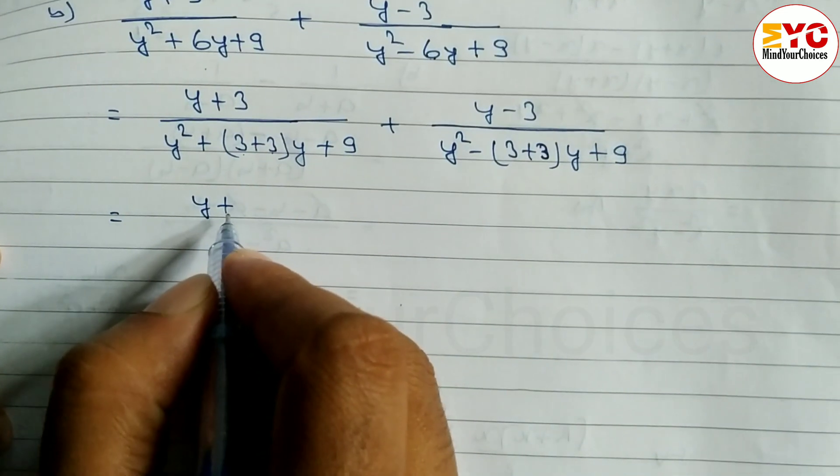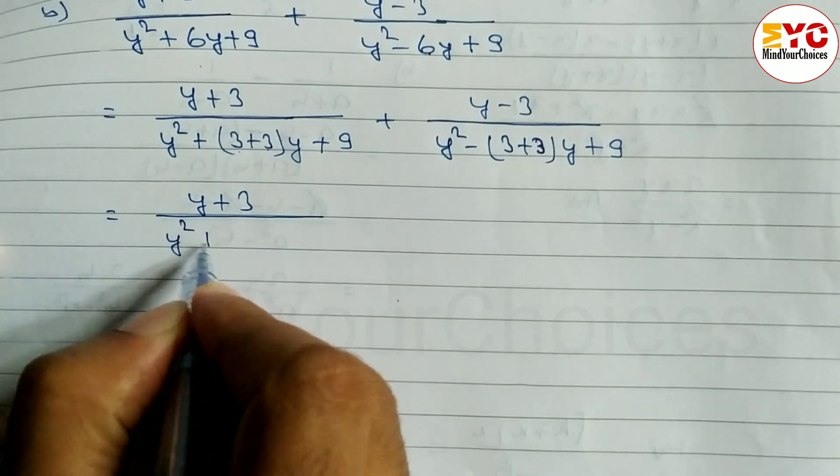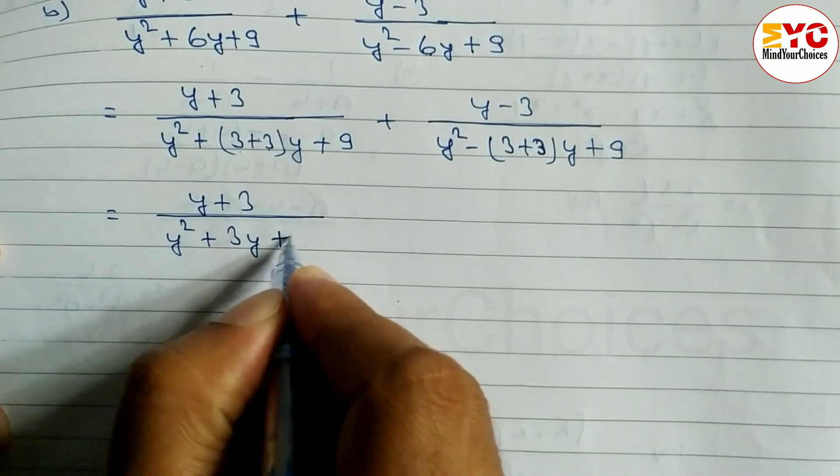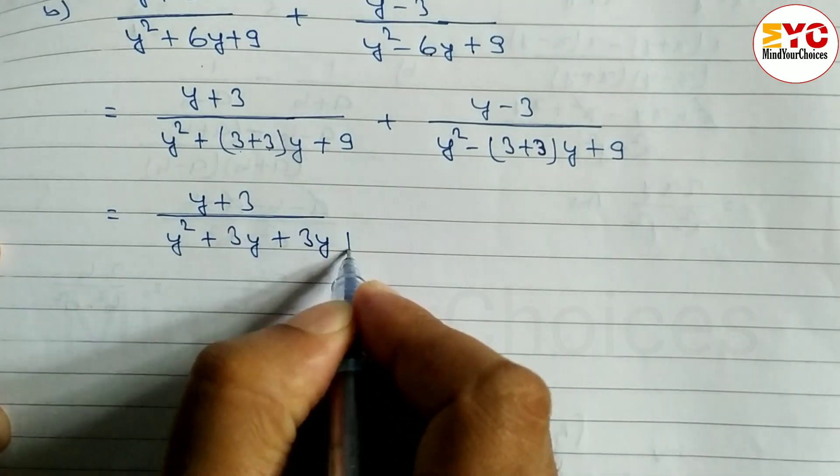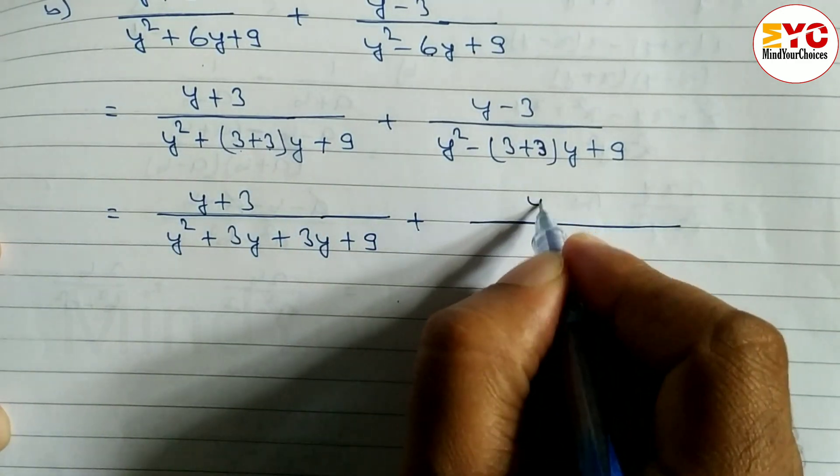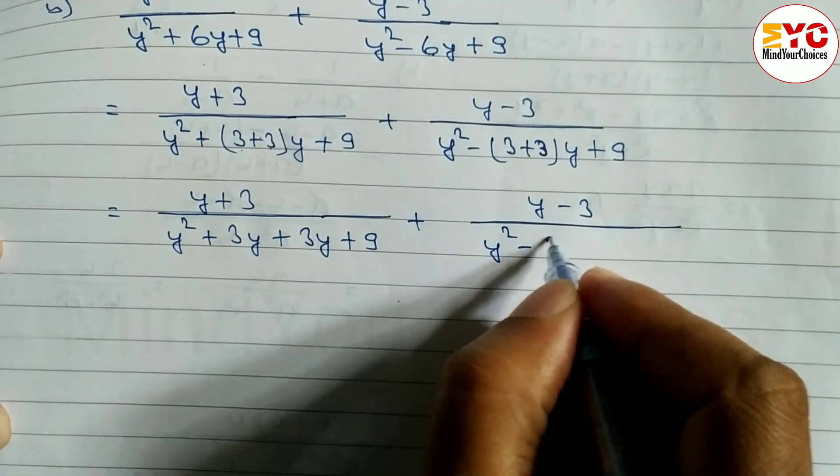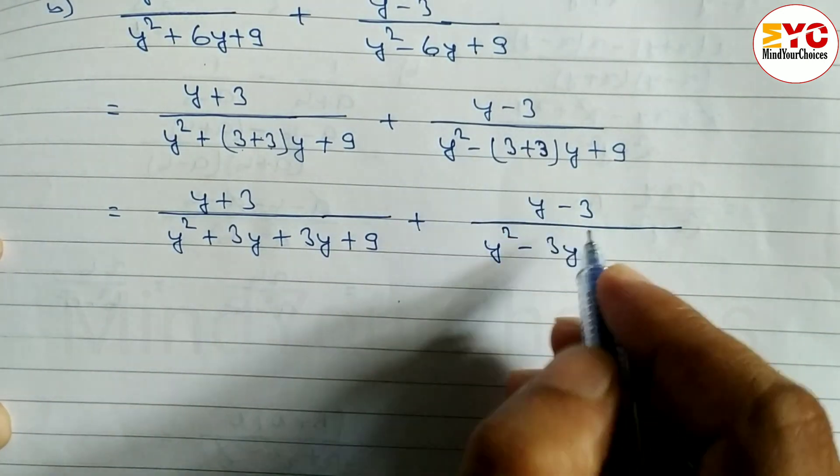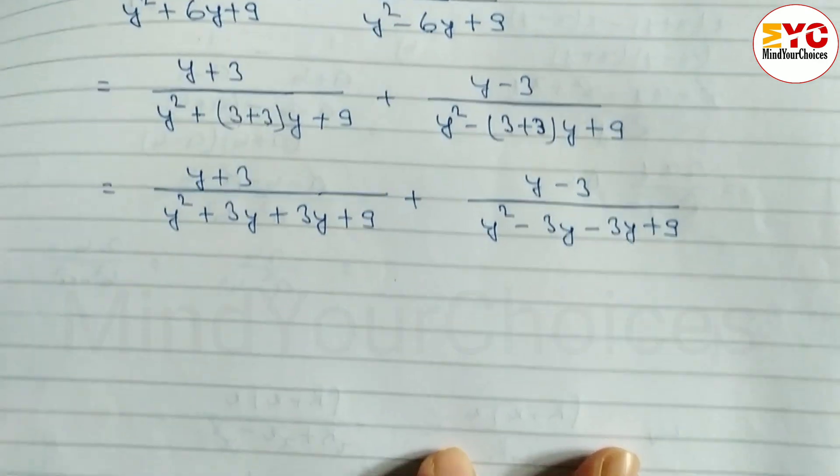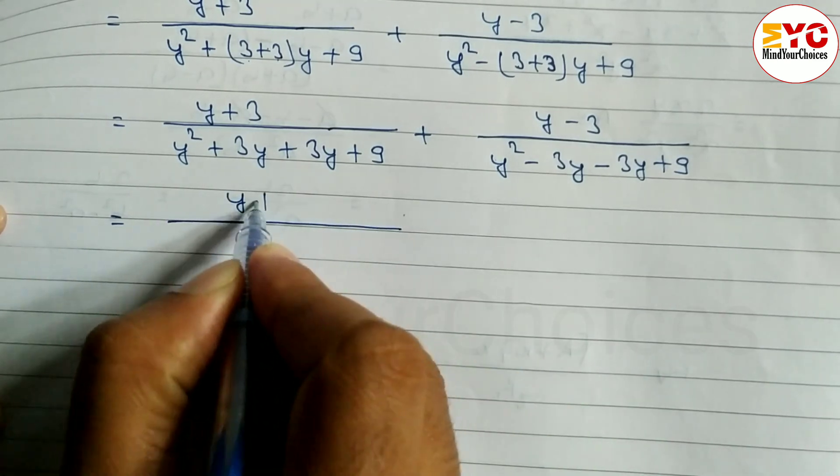So (y plus 3) divided by (y square plus 3 times y which is 3y, plus 3 times y another 3y, plus 9) plus (y minus 3) over (y square minus 3 times y, 3y, minus 3 times y, 3y, plus 9). Same to same.